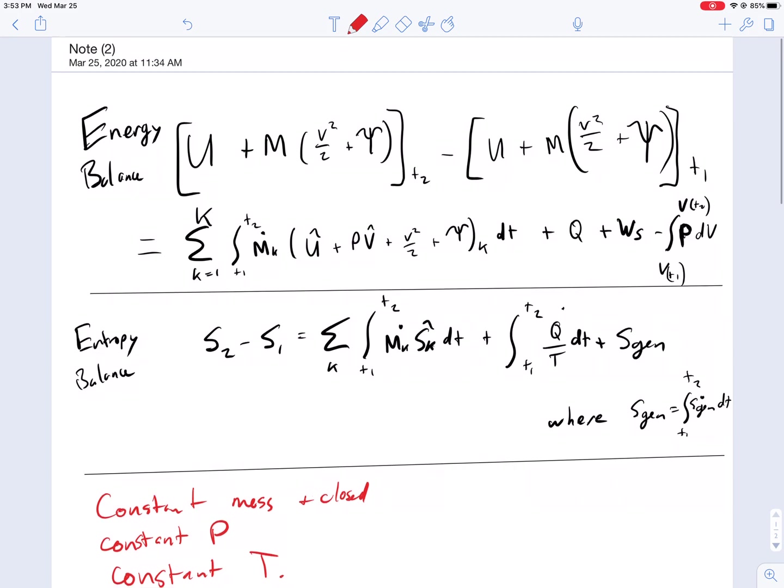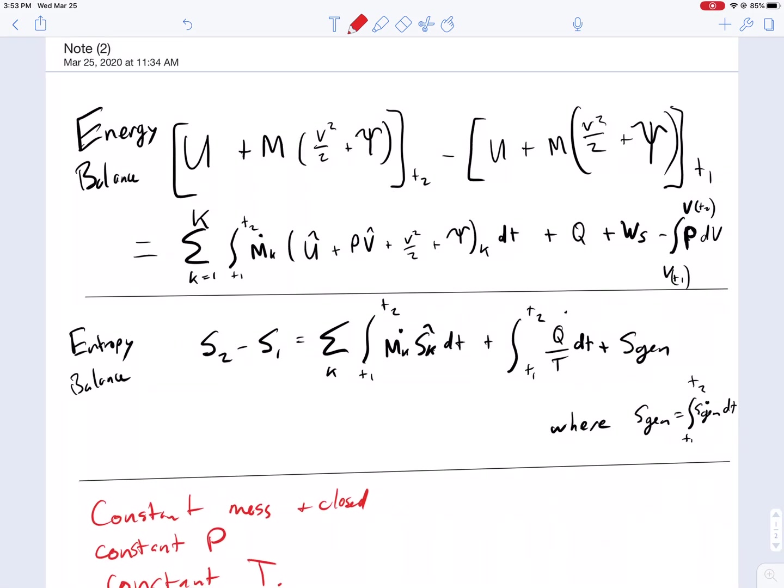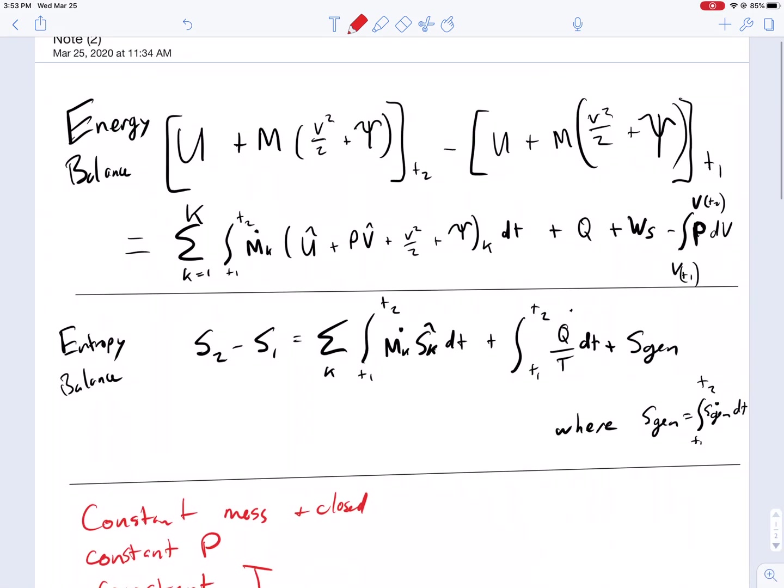This covers many of the systems that we'll encounter in biology. So starting with these two balance equations for energy and entropy, we're going to start by crossing out terms we don't need. First we're going to cross out the terms for kinetic and potential energy. We don't have any perceived changes in that.